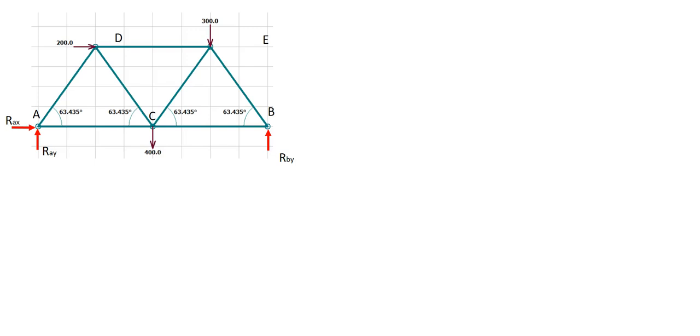In this example, we will take a look at solving for the reaction forces of a truss with three external loads. We see that we have a pin at joint A and a roller at joint B, as is determined by the reaction force arrows.